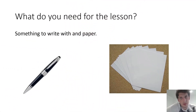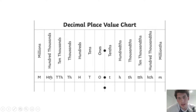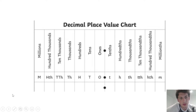So what are you going to need for the lesson? You're going to need something to write with and paper, and if you are a superstar, I would recommend having this place value chart. If you do not have these things, please pause the video and go and get them as they are very important for today's lesson, and then press play when you are ready to continue.